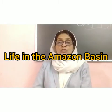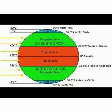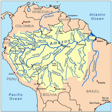Life in the Amazon Basin. Before learning about the Amazon Basin, let us look at the map. Notice that the tropical region lies very close to the equator, that is, between 10 degrees north and 10 degrees south. So it is referred to as the equatorial region.